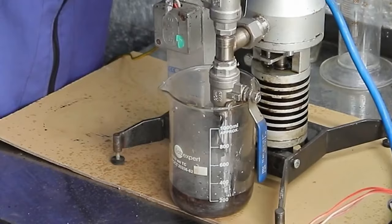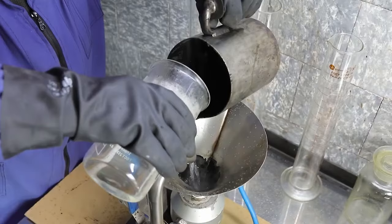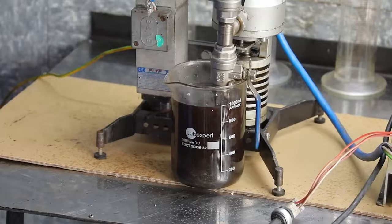If we look at the resulting bitumen emulsion, we will see that it has a brown color. It is homogeneous and contains no inclusions. These are the first signs of good quality emulsion.